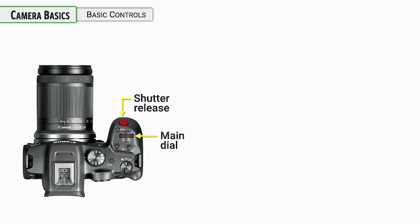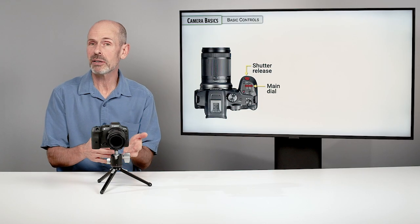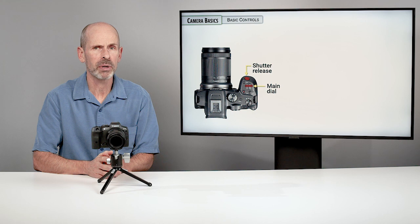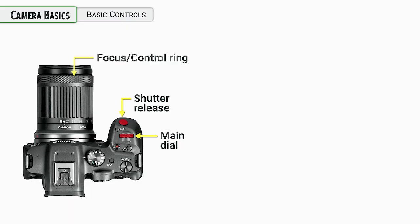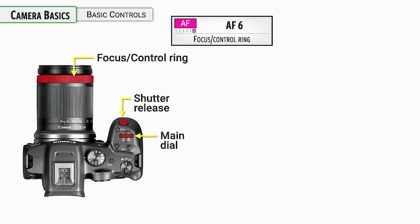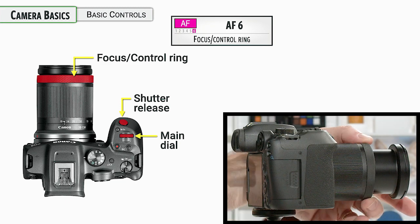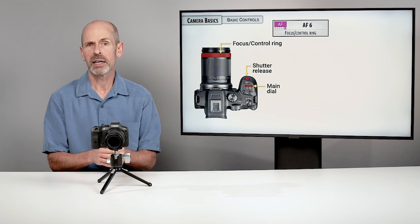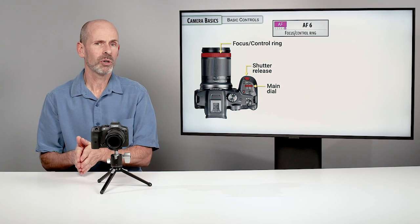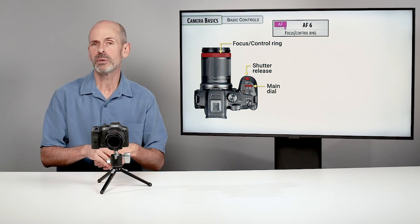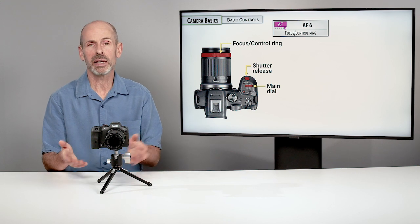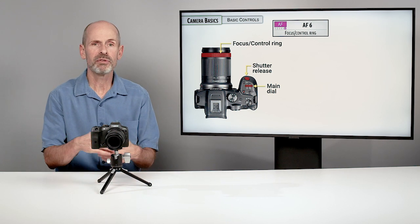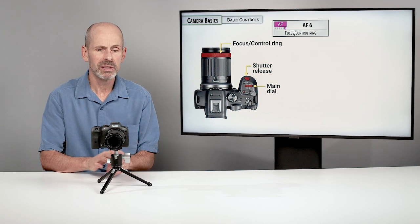The shutter release is for taking photos. The main dial is the primary go-to dial, often changing shutter speed but capable of changing many things depending on the camera mode. The lens has a focus control ring and a zoom ring. The focus control ring can be set to manual focus or reassigned via the custom menu to control shutter speed, aperture, ISO, or something else — a feature on most newer Canon lenses.